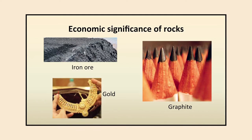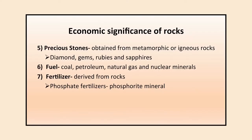Fifth, various precious stones such as diamond, gems, rubies, and sapphire are derived from metamorphic and igneous rocks. Sixth, fuels — coal, petroleum, natural gas, and nuclear minerals — are derived from these rocks and are used for generating electricity for homes and industries. Fertilizers are also derived from rocks; phosphate fertilizers are derived from phosphorus minerals and are widely used in growing food.